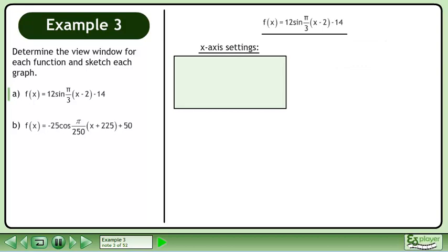Let's begin with the x-axis settings. The period can be found with the formula p equals 2π over b. Plug in π/3 for b. Multiply the numerator by the reciprocal of the denominator. The pi's cancel, giving us a period of 6 units.